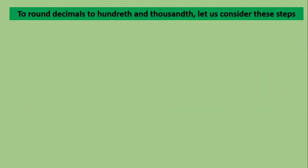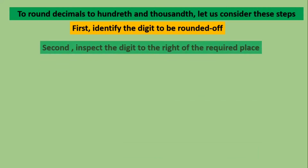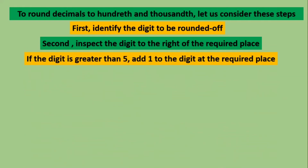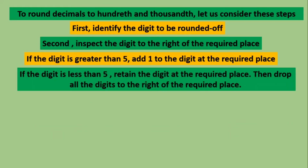To round decimals to hundreds and thousands, let us consider these steps. First, we have to identify the digit to be rounded off. Second, inspect the digit to the right of the required place. If the digit is greater than 5, add 1 to the digit at the required place. If the digit is less than 5, retain the digit at the required place. Then drop all the digits to the right of the required place.